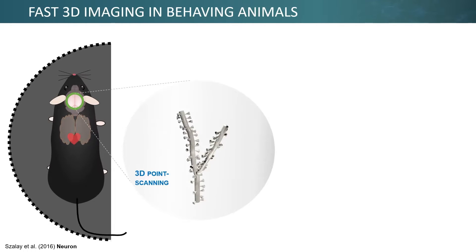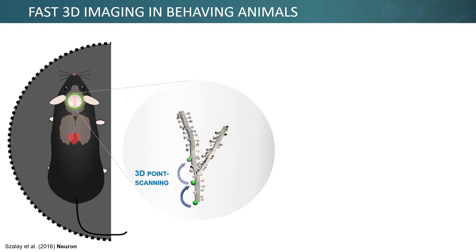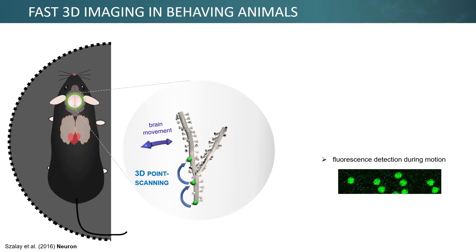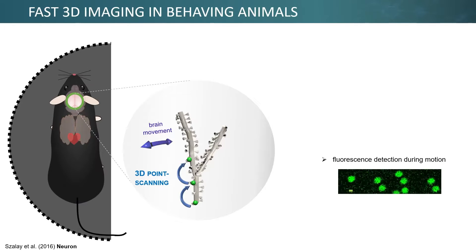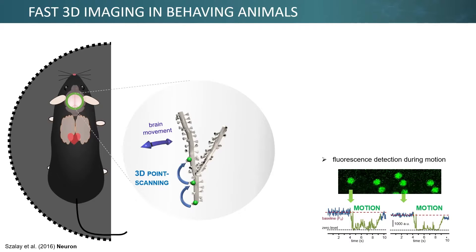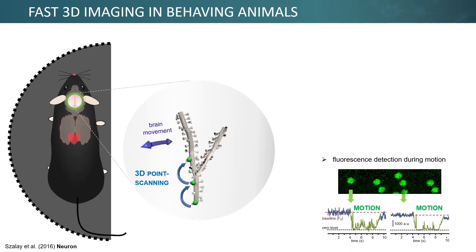But why is real-time motion correction essential in in vivo measurements? Brain movement, due to intended and visceral motion such as heartbeat or respiratory movement, can cause very large artifacts in the calcium signal, as shown on the right, especially when the ROI is relatively tight and the scanned object can move out from the scanned area or volume.